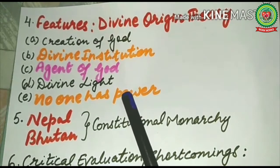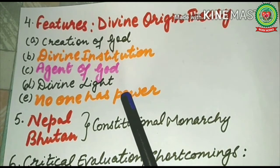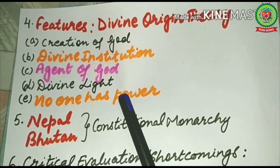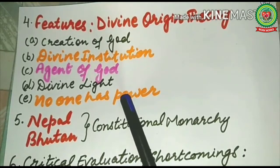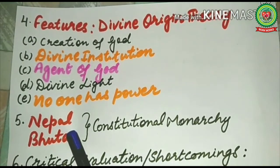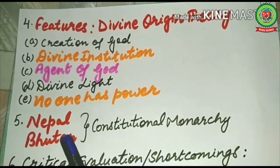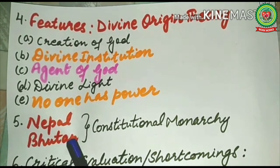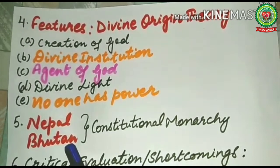Even today, states like the UK, Belgium, Bhutan, Cambodia, Canada, Denmark, Spain, Japan, and Malaysia are still monarchies, but they do not work like old monarchies. We are living in the modern age, so each monarchy works as a constitutional or limited monarchy. Recently, Nepal abolished monarchy. Even Bhutan now has a constitutional monarchy, meaning monarchy works there but through an elected government.